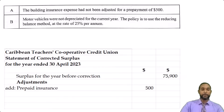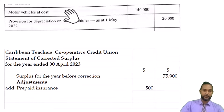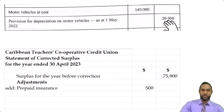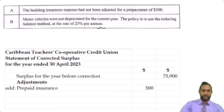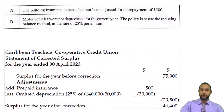And then we have to subtract the depreciation. They said reducing balance method, so you have to go up to the trial balance. Motor vehicles at cost is 140. You minus the existing provision of 20 — 140 minus 20 is 120. Then 25% of 120 is 30,000. So you have a net adjustment of 29,500 negative, which means your new surplus for the year after correction is 46,400. You can put these two things across here to have one running column — that's perfectly fine. There's no one right format for this.